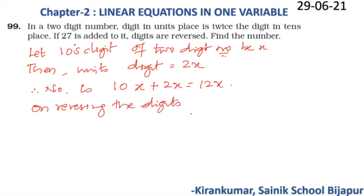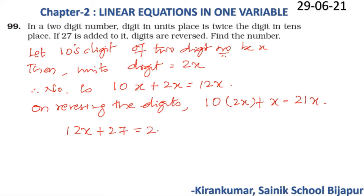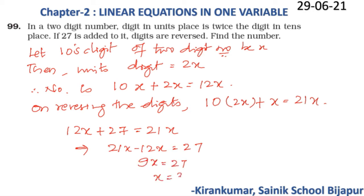On reversing the digits, we get 10(2x) + x = 21x. According to the question, 12x + 27 = 21x. So 21x − 12x = 27, giving 9x = 27, hence x = 3. Therefore, the required number is 12 × 3 = 36.